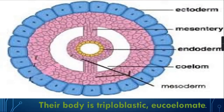Their body is triploblastic and eucoelomate. Triploblastic means three layers — ectoderm, mesoderm, and endoderm. Eucoelomate means they have a true body cavity — the hollow type of structure visible inside, which is the true cavity.